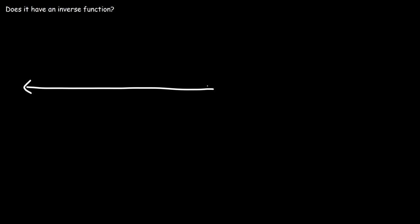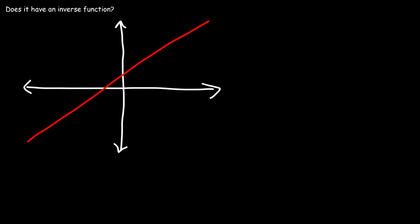Consider this function. Let's use a linear function as our example, and let's call it f of x. So does f of x have an inverse function? To determine if f of x has an inverse function, you have to show that it's a one-to-one function. You have to show that it passes the horizontal line test.